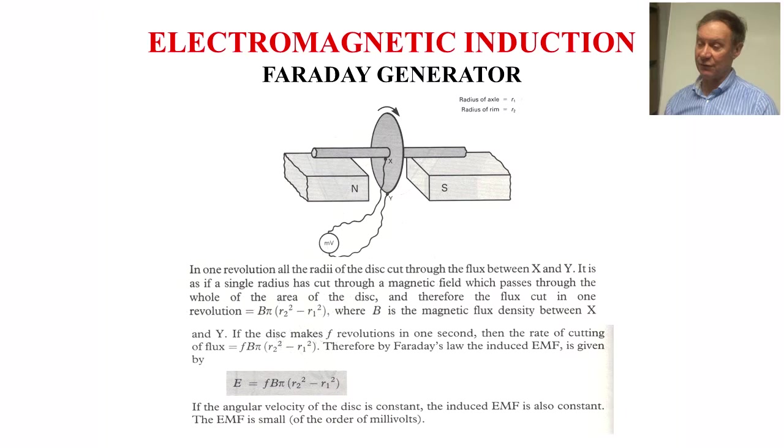Finally, the Faraday generator is simply a disc rotating in a magnetic field. In one revolution, the disc cuts through the flux between X and Y as if a single radius has cut through the magnetic field which passes through the whole of the area of the disc. Therefore, the flux in one revolution is B pi R2 squared minus R1 squared, where B is the magnetic flux density between X and Y. And so if we gather these things together, we can show that E is F B pi R2 squared minus R1 squared. You typically get the EMF in the order of a few millivolts from the output from this.